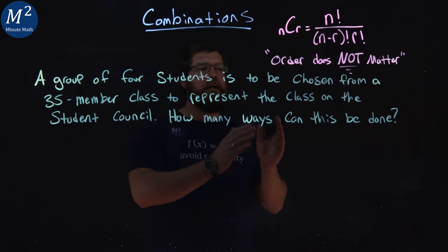A group of four students is to be chosen from a 35-member class to represent the class on the student council. How many ways can this be done?